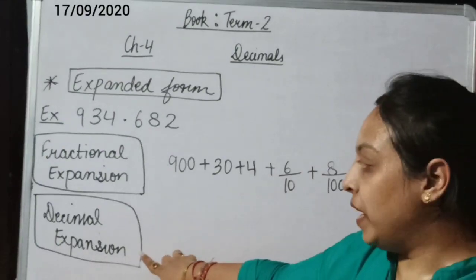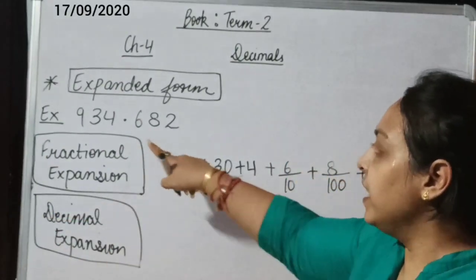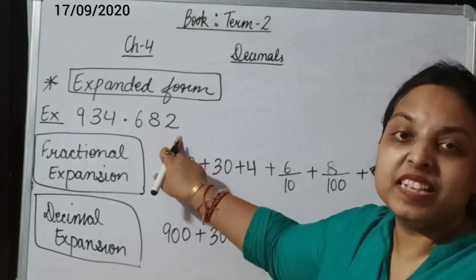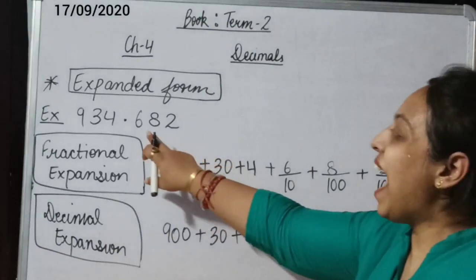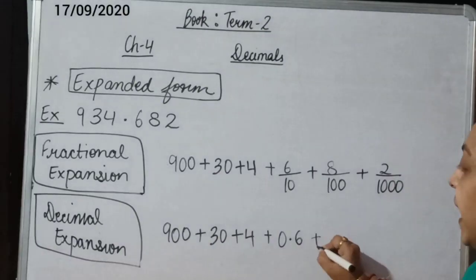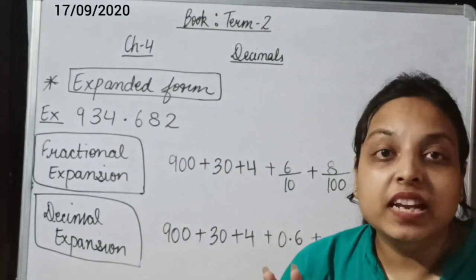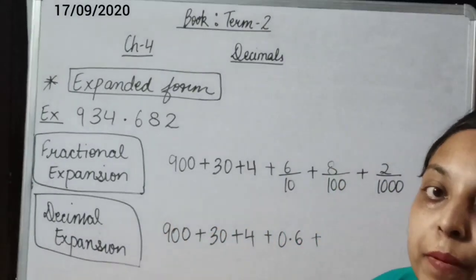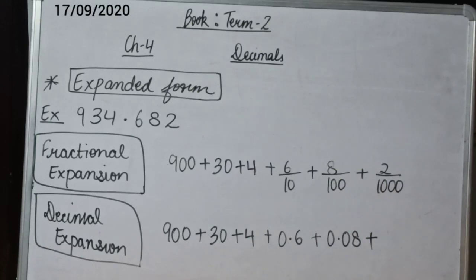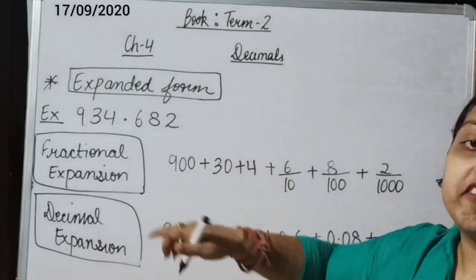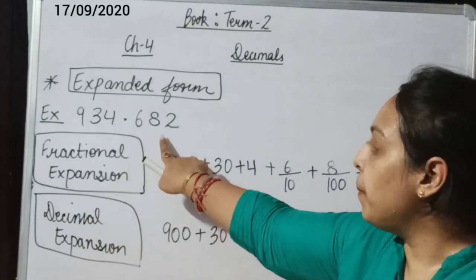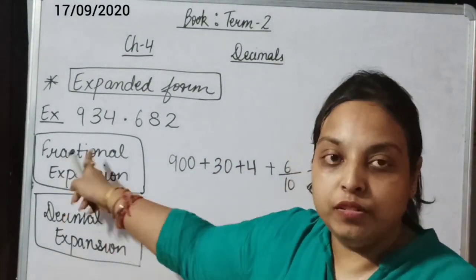Now the next is decimal expansion. In this, the whole part will be the same, so 934 will be 900 plus 30 plus 4. But the decimal part will be represented by writing decimal numbers. So 6 is at the 10ths place, so we write it as 0.6 — the first place after decimal. Now 8 is at the 100ths — the second place after decimal — so it will be 0.08. And 2 is at the 1000ths — the third place after decimal — so it will be 0.002. This is the decimal expansion of the given number.